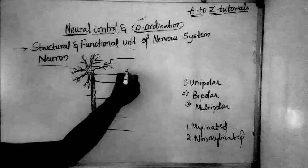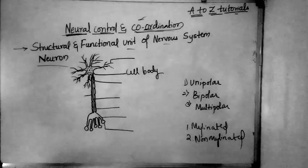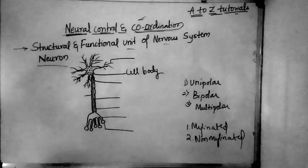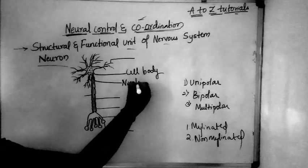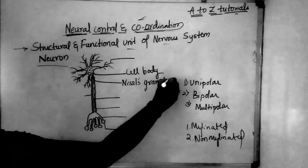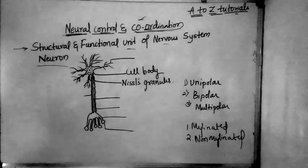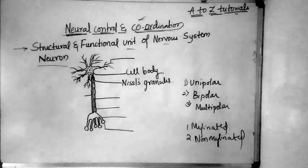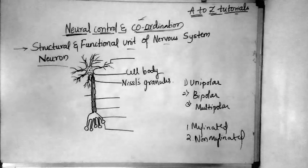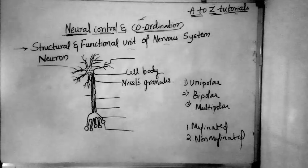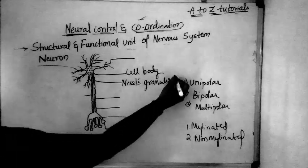The neuron has a cell body consisting of the cytoplasm, cell organelles, and Nissel's granules. Nissel's granules are small granular bodies containing the RER and ribosomes — they are nothing but granules of ribosomes and the rough endoplasmic reticulum.